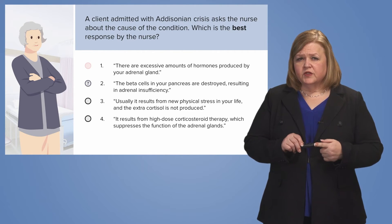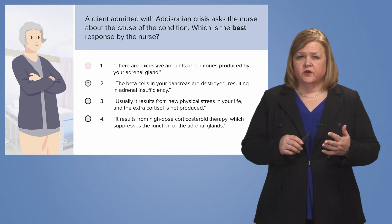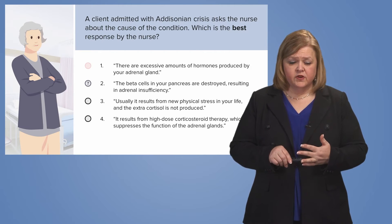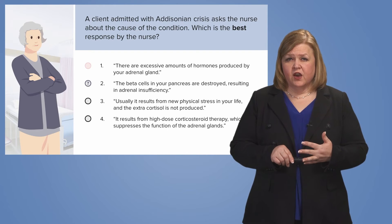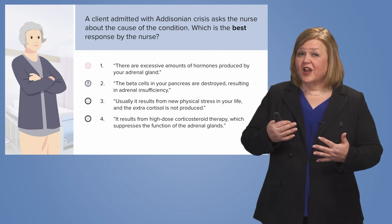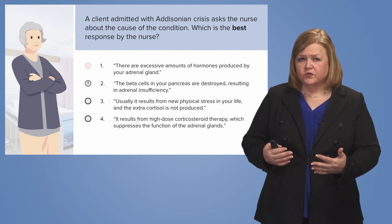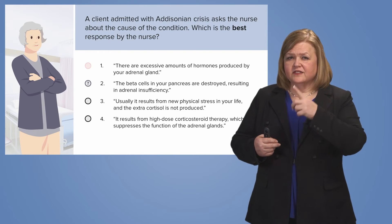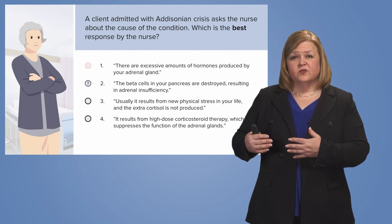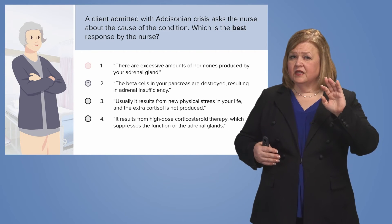Number three: usually it results from a new physical stress in your life, and the extra cortisol is not produced. I know Addison's disease affects my adrenal gland, and with Addison's disease we often have to add steroids. Those are the things that help me respond to stress — so if my adrenal gland is not working, I'm going to need more hormones. A new physical stress makes sense, because if I have Addison's disease I can't respond to stress, and extra cortisol is not produced. Number three makes good sense, but I still haven't ruled out number two.